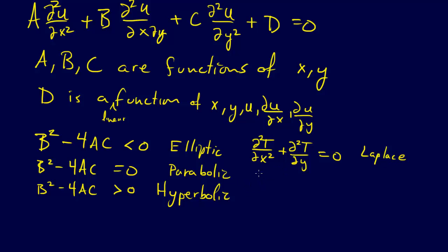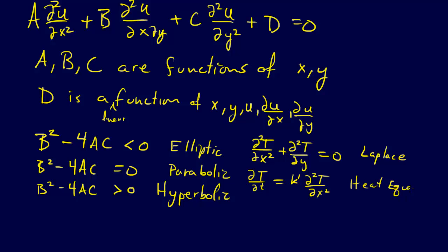For the parabolic type, the classic example is the partial of T — where T is temperature — with respect to time, equals K-prime times the second partial of T with respect to X. K-prime is just a parameter, not a derivative. This is the heat equation.